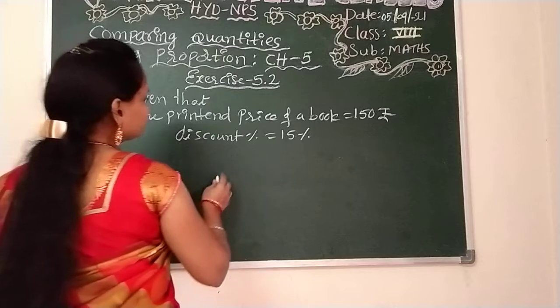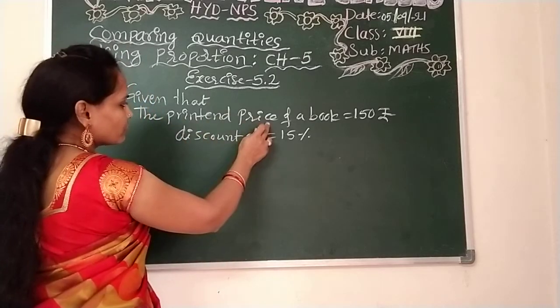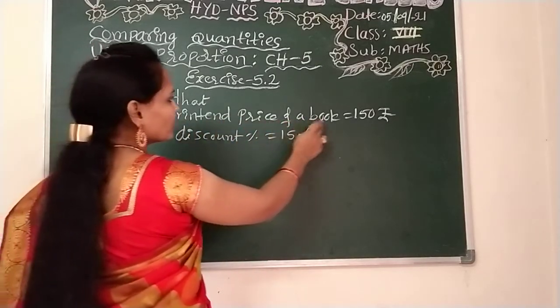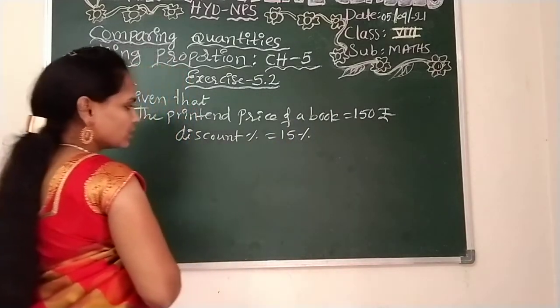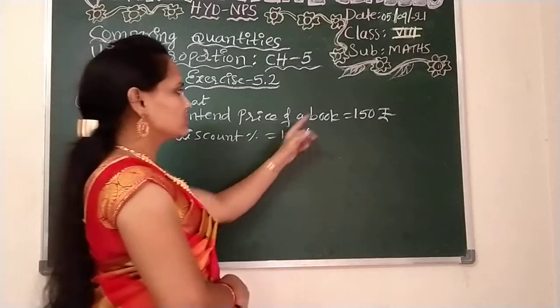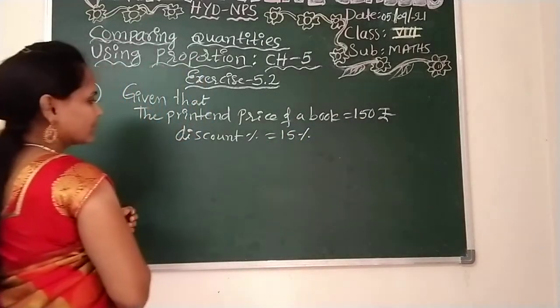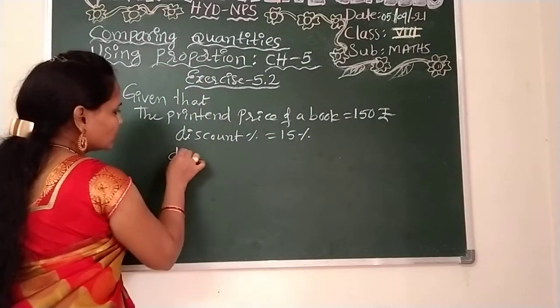Here, the given information I wrote: the printed price of a book is 150 rupees, discount is 15 percent. First we need to calculate the discount, 15 percent on 150.